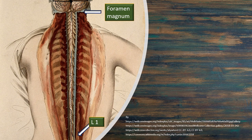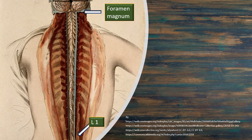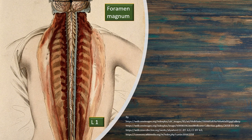The spinal cord is the caudal component of the central nervous system, extending from the foramen magnum to the L1 vertebral level. It's located inside the vertebral canal.